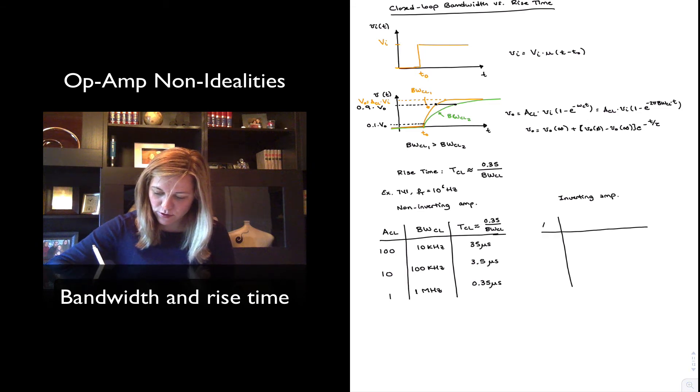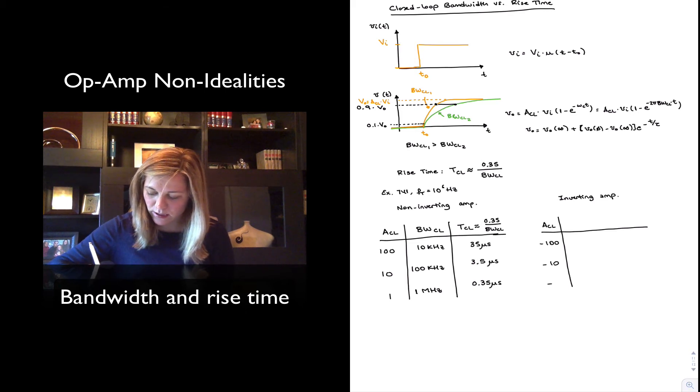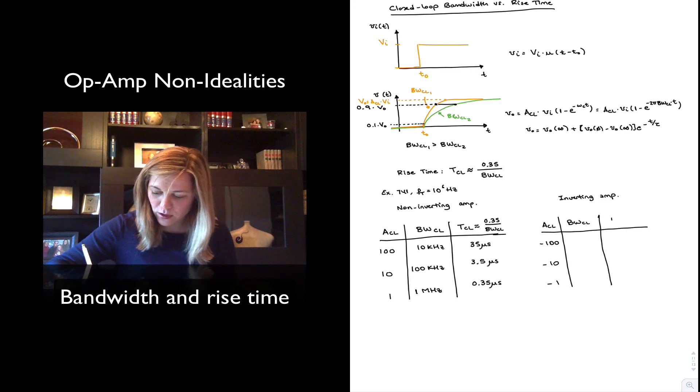And the same thing for the inverting amplifier. I have a closed loop gain. Let's say negative 100, negative 10, negative 1, a corresponding closed loop bandwidth. And I can calculate the rise time due to the bandwidth limitation with my approximation 0.35 divided by the closed loop bandwidth.